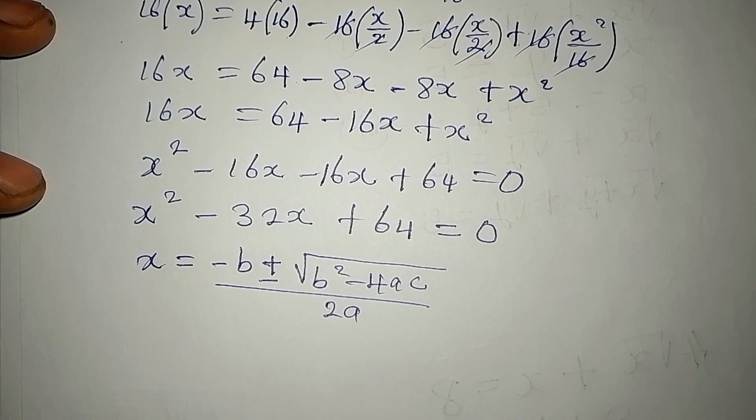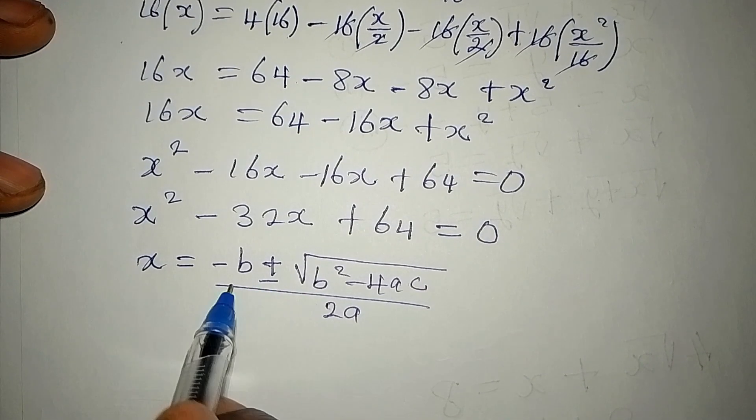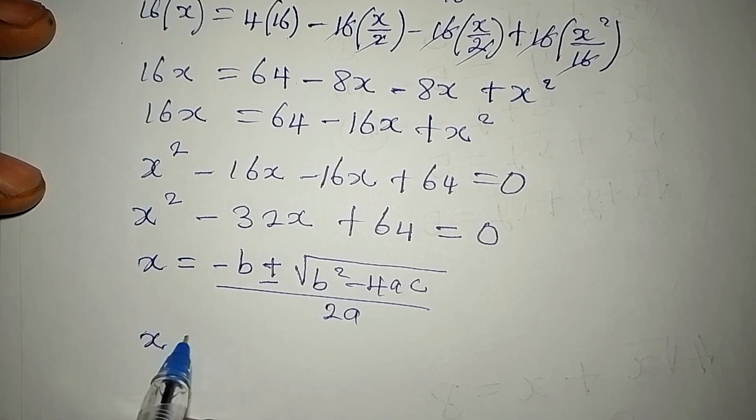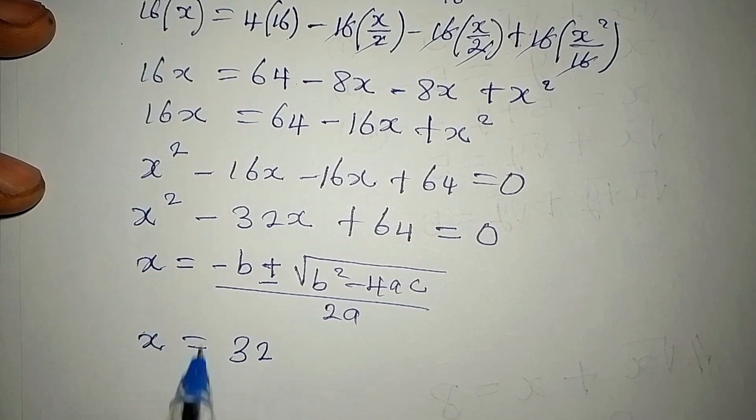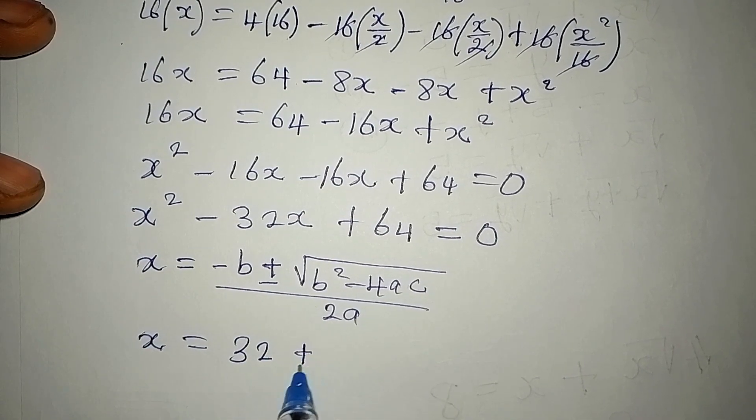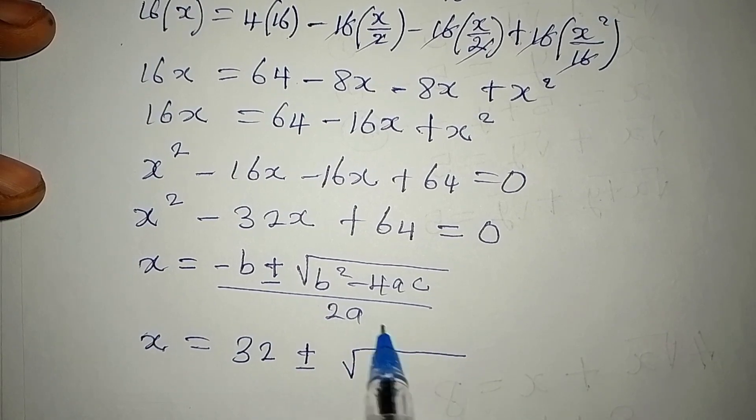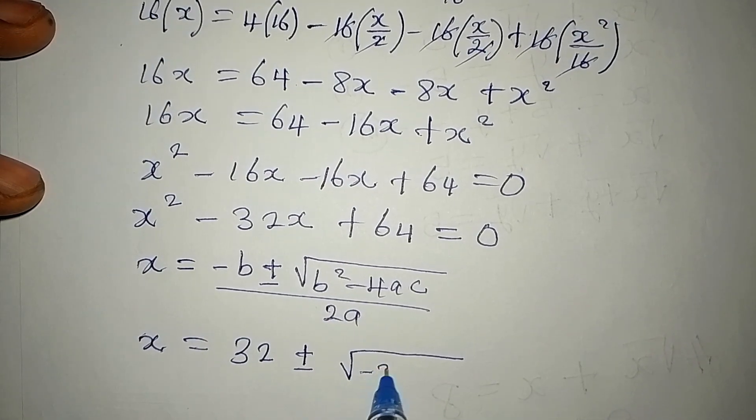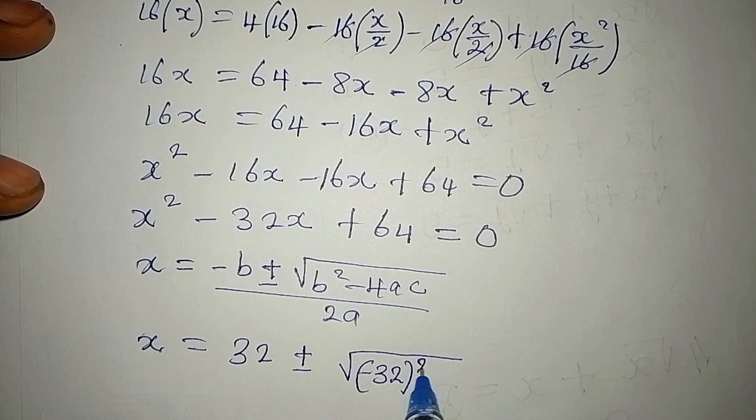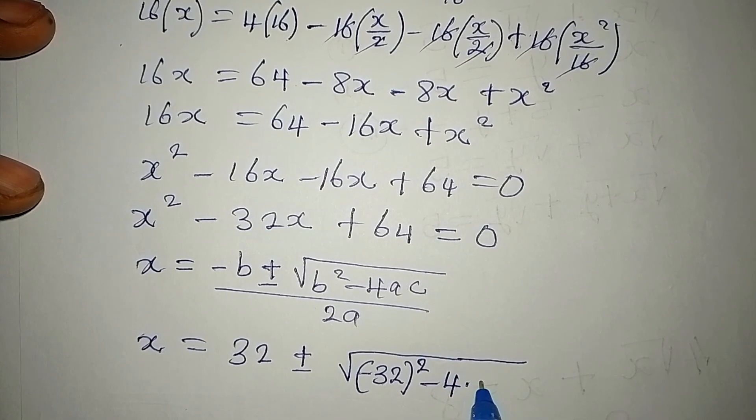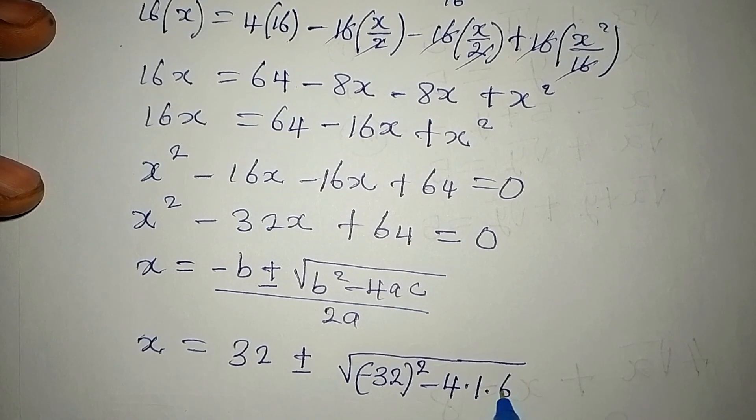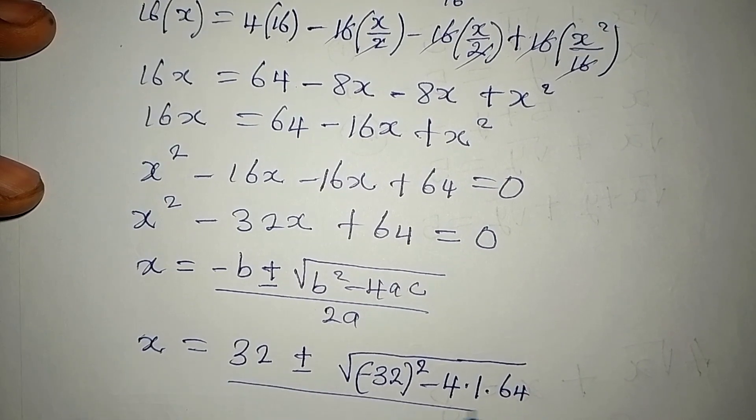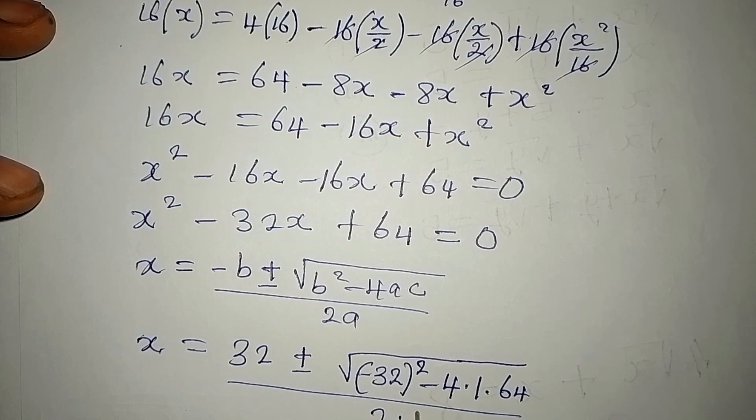Now what is our b? Our b is -32. That means x will be equal to 32, because negative negative is positive, plus or minus. We have b squared. That would be (-32)² minus 4 multiplied by a is 1 times c and c is 64. This is divided by 2 multiplied by 1.